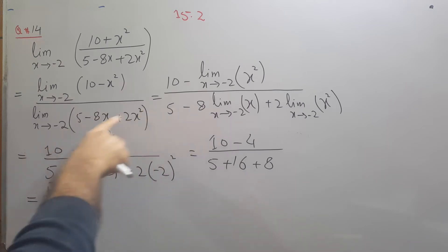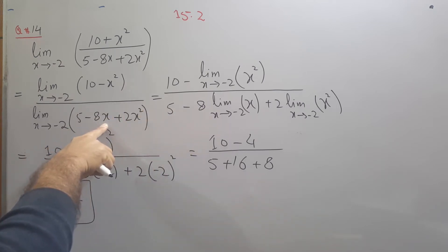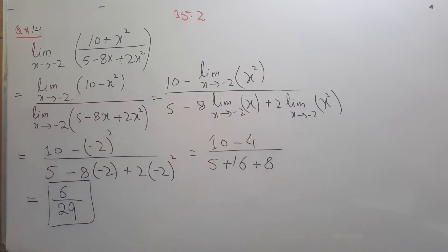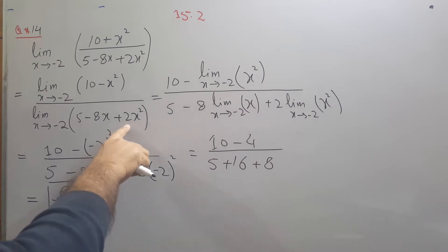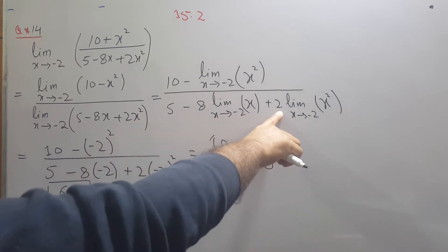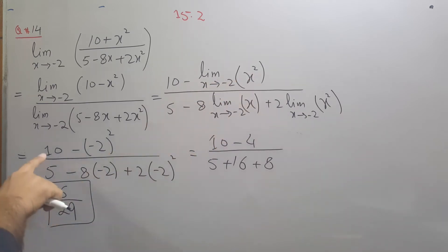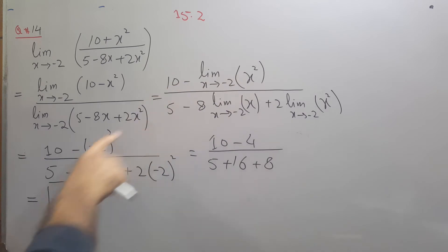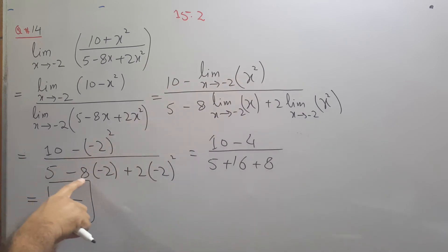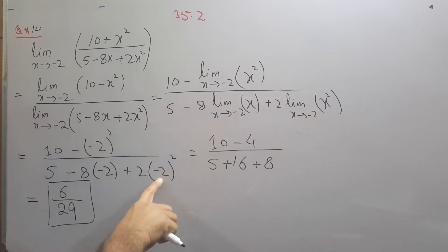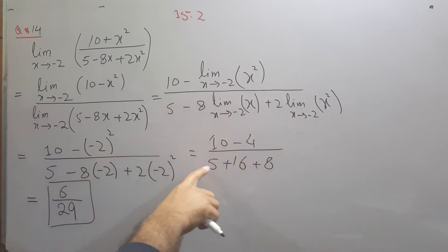For the denominator: 5 is a constant taken out, then from 8x the constant 8 comes out and we apply the limit on x; from 2x squared we take out 2 and apply the limit on x squared. Applying the value x equals minus 2: the numerator gives 10 minus (minus 2) squared equals 10 minus 4 equals 6. The denominator gives 5 plus 16 plus 8 equals 29. The answer is 6 over 29.